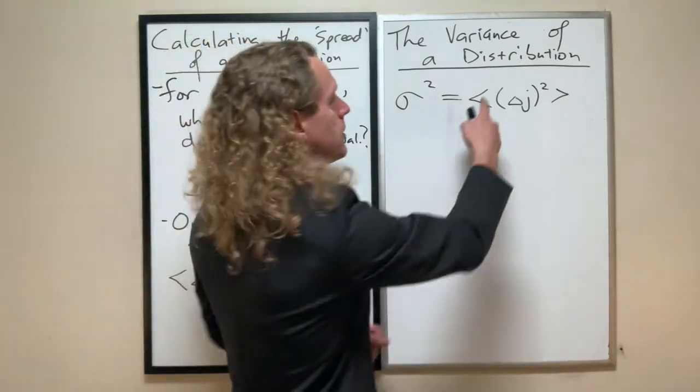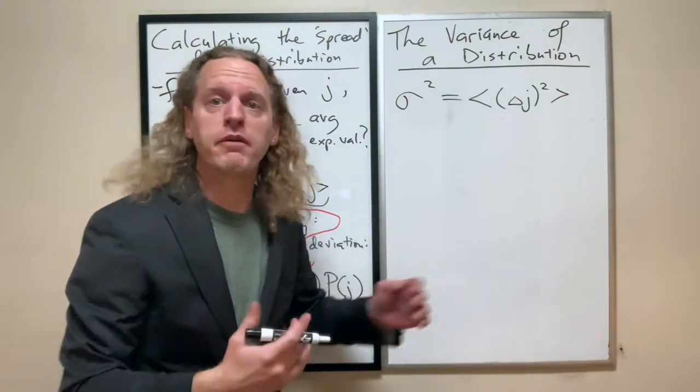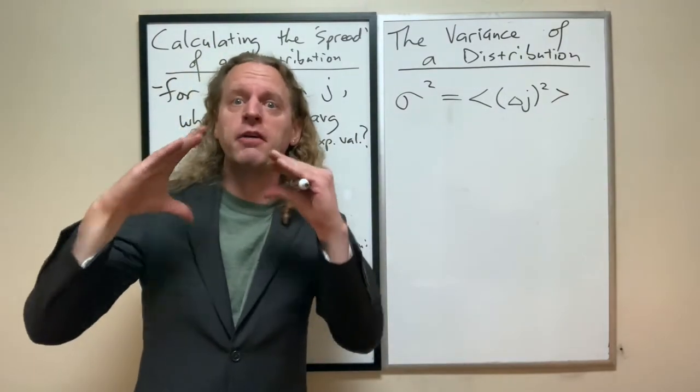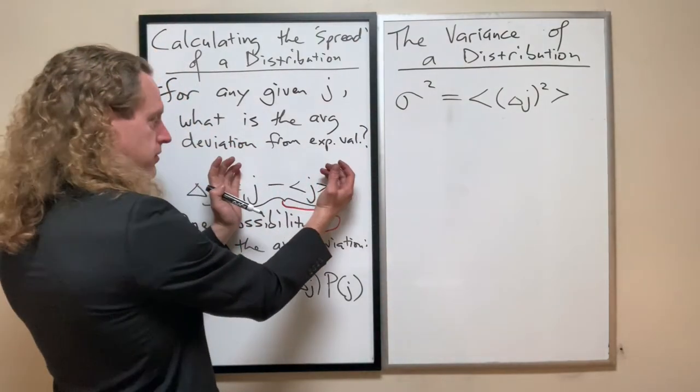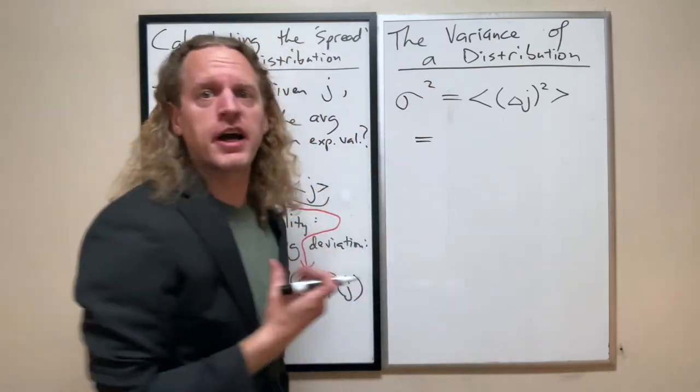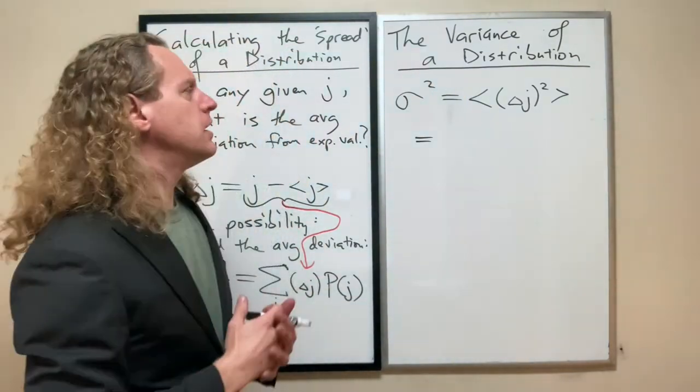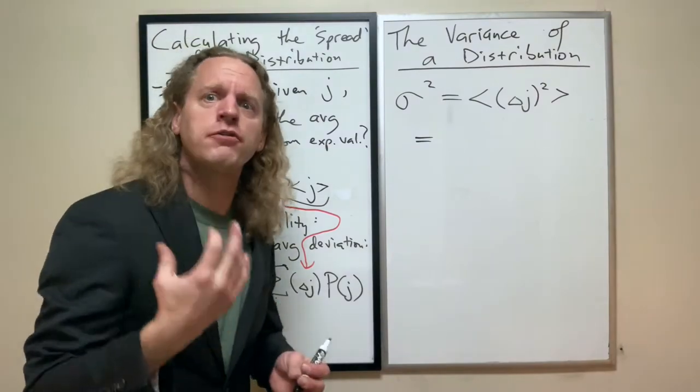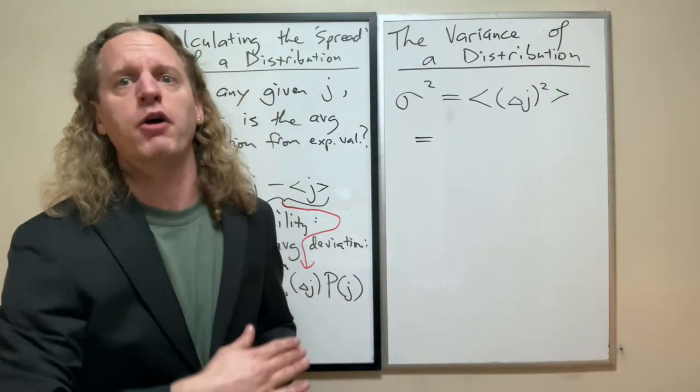I'm going to use the proper symbol that we actually use for this. I'm going to write sigma squared, which is what we call the variance. All we have to do now is take our definition for that delta j, square it, and then average it. To find the average of that, we use back to our formula the expectation value of any function.